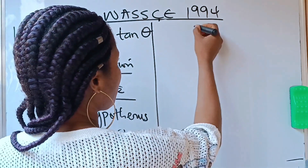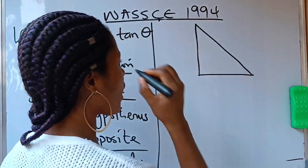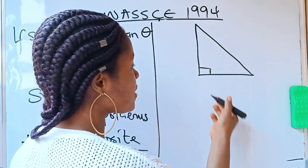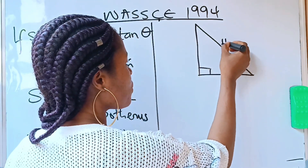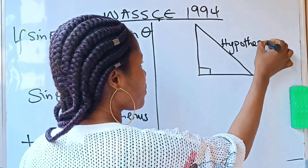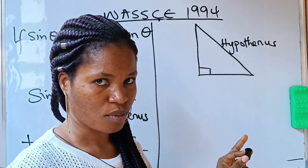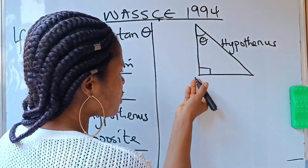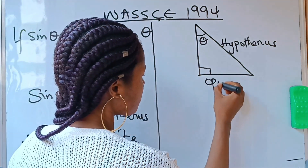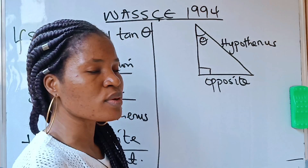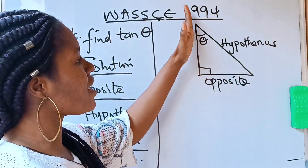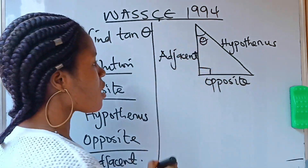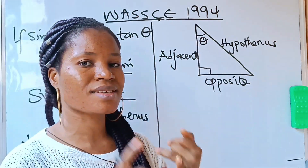When you draw a right angle triangle, you are going to have a right angle here. The side of this right angle triangle that is facing this right angle is called the hypotenuse — it is always the longest side. Assuming this is our angle theta, the side facing that angle is the opposite. The remaining side is the adjacent.